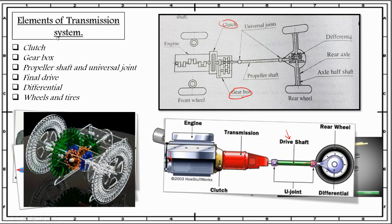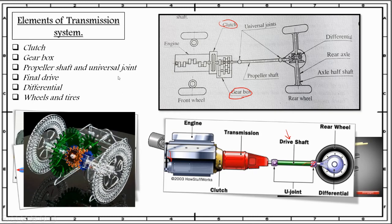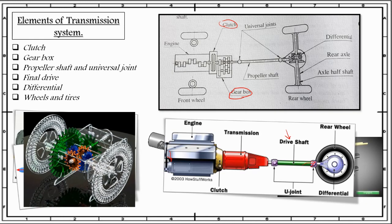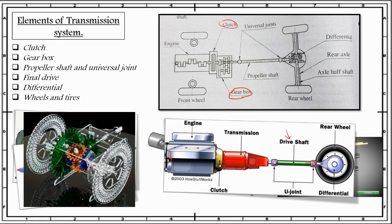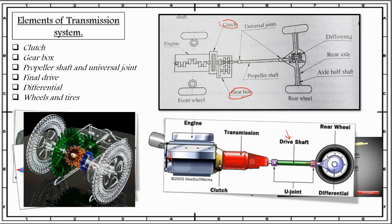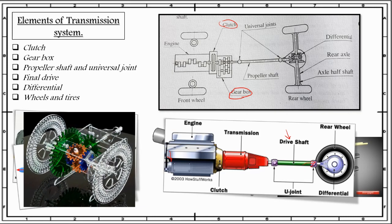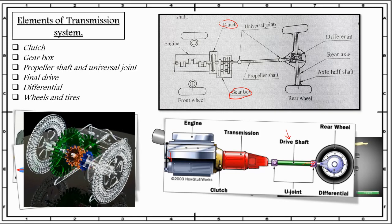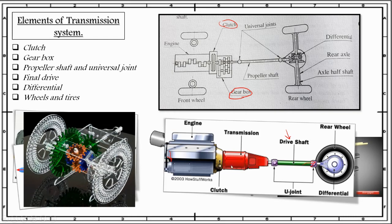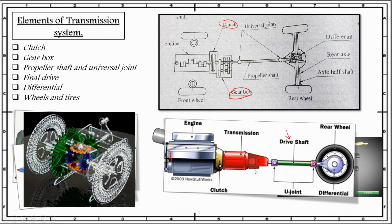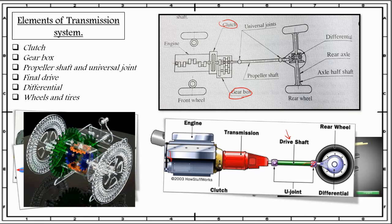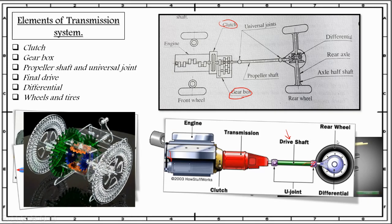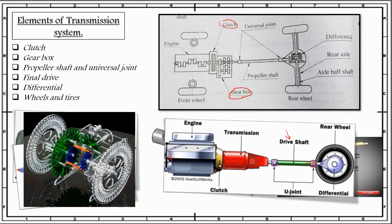So these are the six essential components of the transmission system. Now, when you want to change the gear of the vehicle, you first press the clutch — meaning you disengage the engine from the rest of the transmission system so no power is transferred. Next, you change the gear, which happens inside the gearbox. Then you release the clutch, meaning the engine is now again engaged to the transmission system and the power is transmitted via the transmission system to the driving wheels — in our case, the rear wheels. I hope you now have an idea of how the transmission system works.